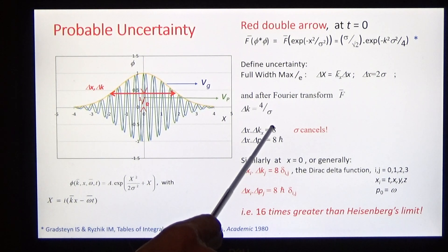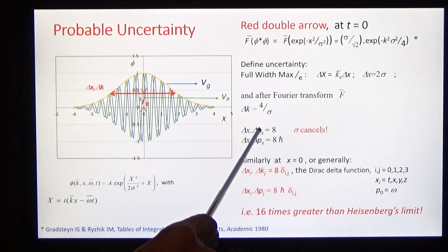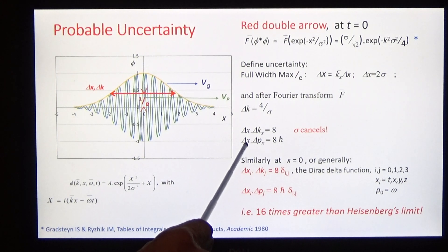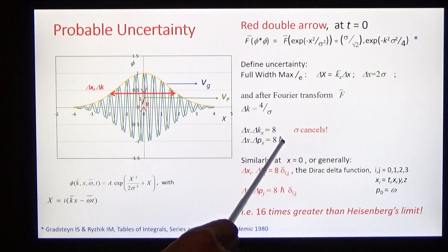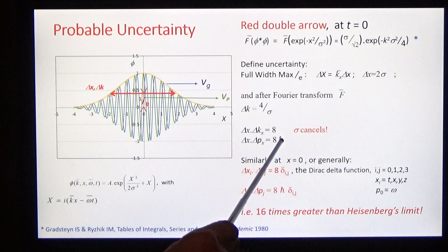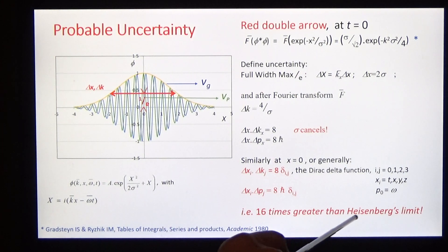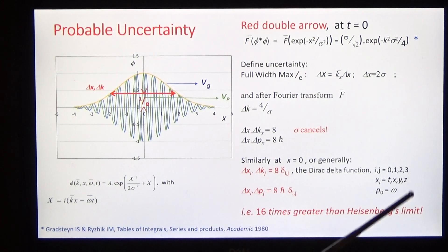And if we transform k with the de Broglie relationship, we get the familiar kind of result: dx·dpx is equal to 8 times the reduced h. This is 16 times greater than Heisenberg's limit. And the same result holds in dt·dω.